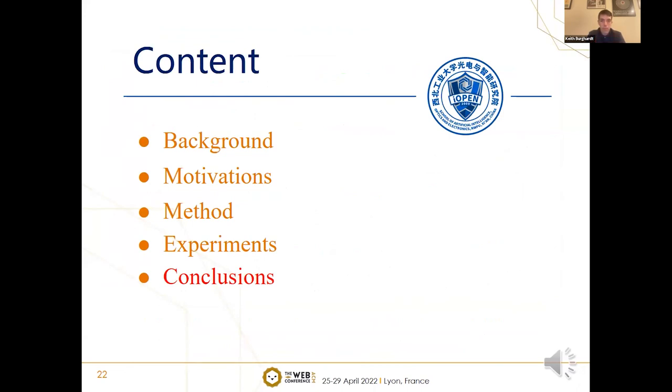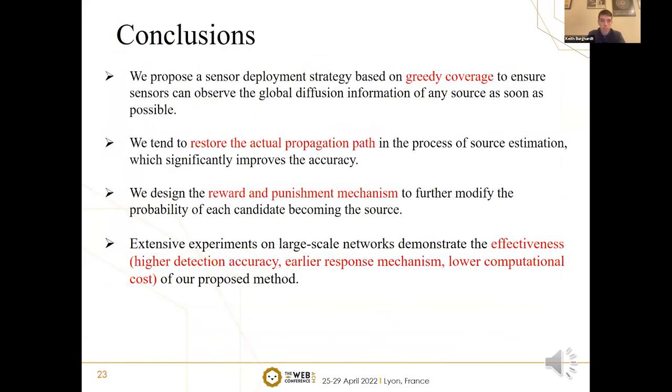Finally, I am inclined to summarize our work. The principle of gradient coverage is adopted in the deployment process so that the sensor can observe the propagation information as early as possible. We attempt to reconstitute the actual propagation path during the source information process. The reward and punishment mechanism further corrects the source probability of each candidate.